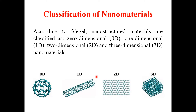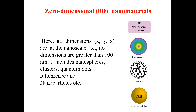In the coming slides we will have a short discussion on what is a zero-dimensional material, what is a 1D material, what is a 2D material, and what is a 3D material. Let us proceed towards zero-dimensional nanomaterials.